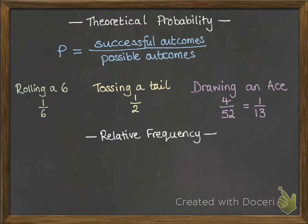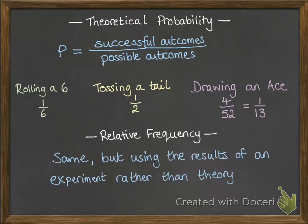We also have relative frequency. Now that works in exactly the same way, but this time you use the results of an experiment rather than theory. So instead of the theory of what we know should happen when you roll a dice or toss a coin or draw cards from a pack, you actually go through the experiment of trying it a large number of times and then seeing how many times those things came up to give you the relative frequency as your probability.